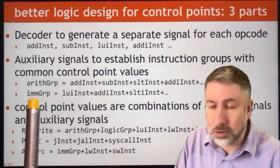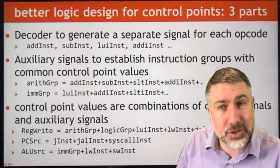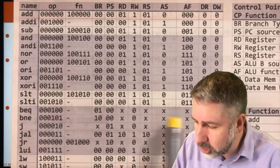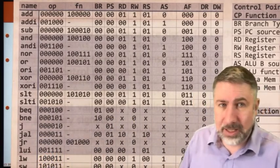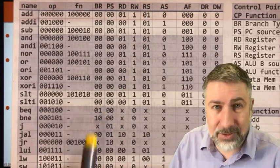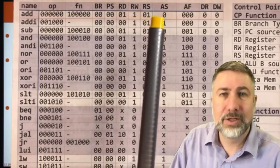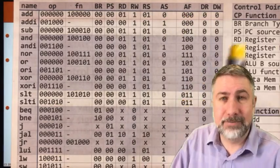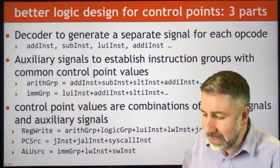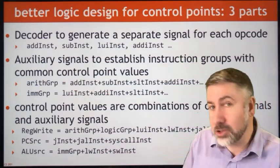Then we create intermediate auxiliary signals that establish instruction groups. Rather than directly mapping a control point to an instruction, we define signals like 'immediate group', 'arithmetic group', and 'branch group'. Looking back at the control point table, these groups share common features. For example, all arithmetic instructions have the same values for most control points — the ALU function differs, but DR and DW are the same. These auxiliary signals simplify the final logic for each control point.